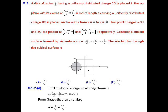By Gauss's theorem, net flux equals summation of Q divided by epsilon naught, which equals -2C divided by epsilon naught.